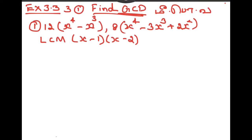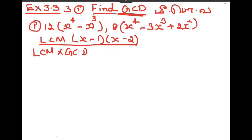Everyone, we can do the 3rd sum in the 10th Max Algebra, exercise 3.3. Here we can find GCD and LCM using the long division method. First, we use LCM into GCD is equal to F of x into G of x.